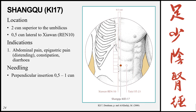Shangqu, Kidney 17, is located 2 cun superior to the umbilicus, 0.5 cun lateral to the midline at the level of Xiawan (Ren 10). Note there is no kidney meridian point 1 cun above the umbilicus. Indications: abdominal pain, epigastric pain with a distending feeling, constipation, and diarrhea. Needling: perpendicular 0.5 to 1 cun.